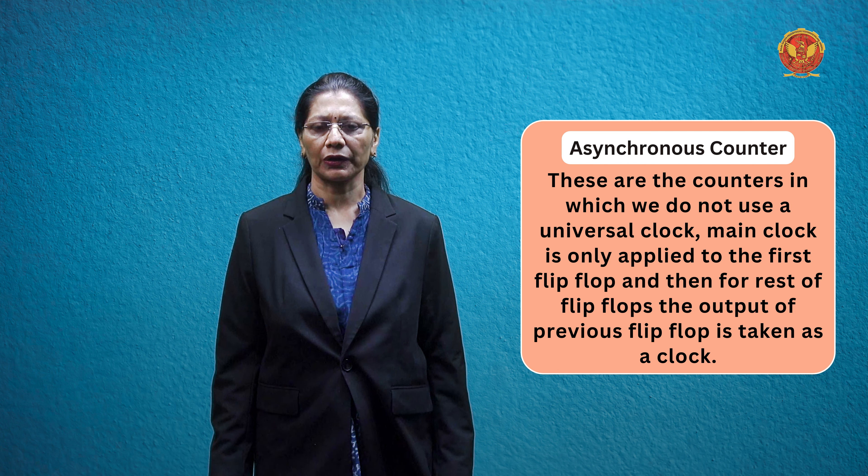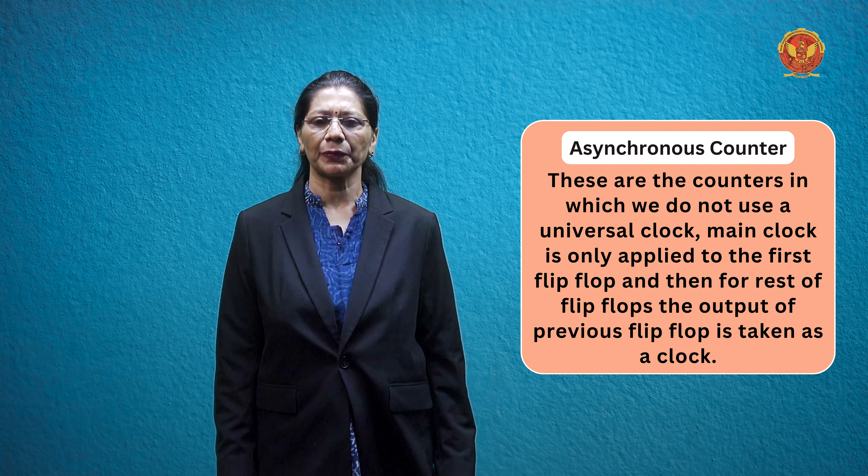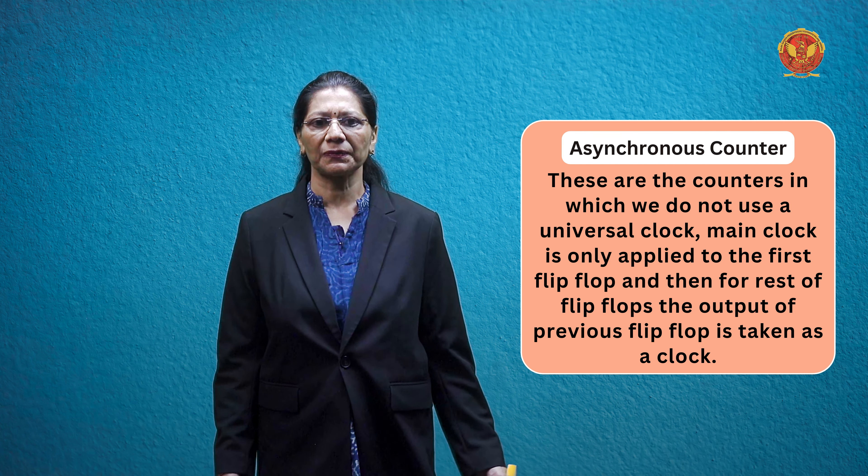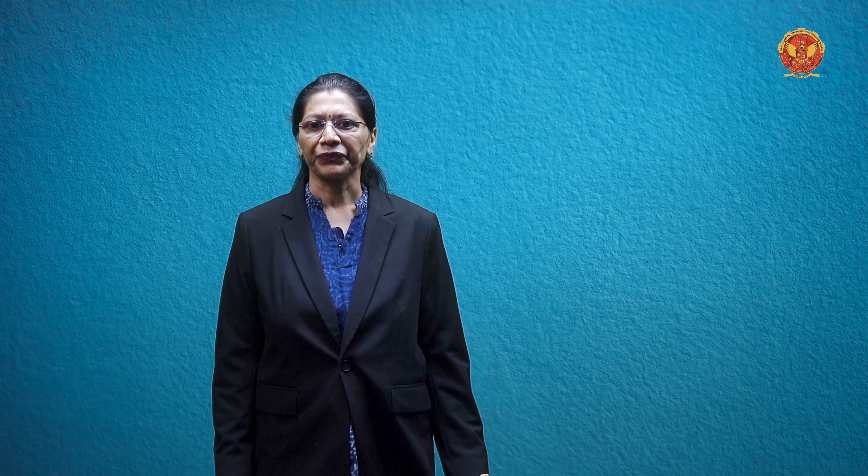Broadly classifying, in asynchronous counter we are not using a universal clock. In the first flip-flop we apply the main clock, and in each succeeding flip-flop we use the previous flip-flop's output as a clock. The change of state transition creates a rippling effect, so it is also known as a ripple counter. As all flip-flops are not changing their state simultaneously, it is called an asynchronous counter.